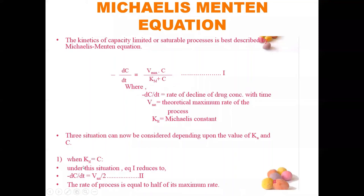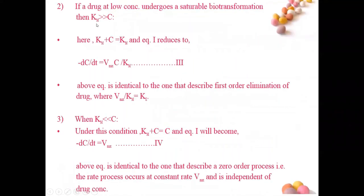This equation — −dC/dt = (Vmax × C) / Km — is identical to the one that describes first-order elimination of the drug, where Vmax/Km equals Ke, the elimination rate constant. So when Km >> C, the kinetics behaves like first-order elimination, and the ratio Vmax/Km can be regarded as Ke.